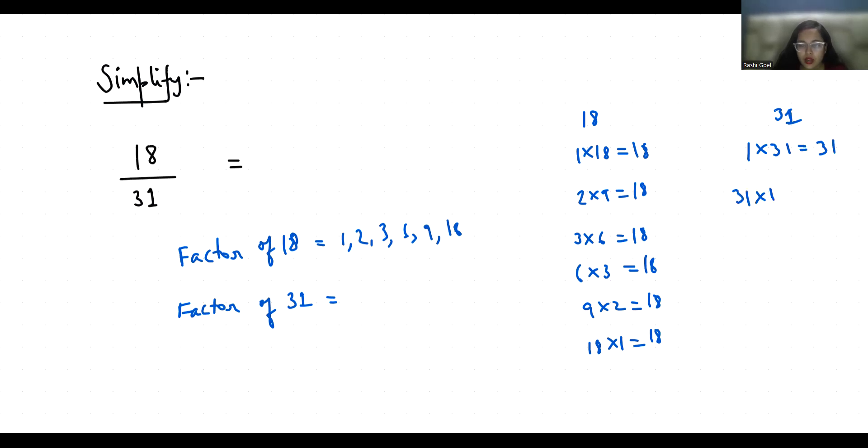So it's 1 and 31. What are the common factors? Only 1. So the highest common factor is 1. We will divide by 1, so 18 by 31 is already simplified. I hope it's clear and you find it useful.